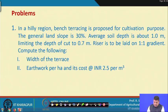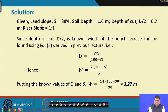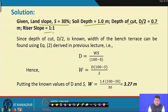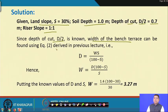The data given are: land slope S equals 30 percent, soil depth is 1 meter, depth of cut d/2 is 0.7 meters, and riser slope is 1 is to 1. In the previous class we derived the relationship between width of bench terrace and depth of cut. You need not remember the formulae; you can derive them from fundamental principles if you understand the concept.